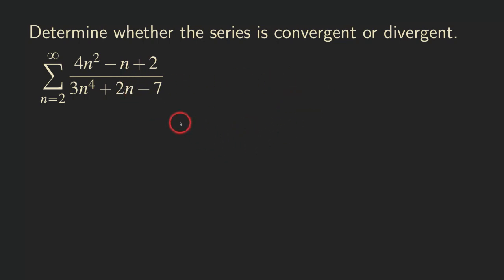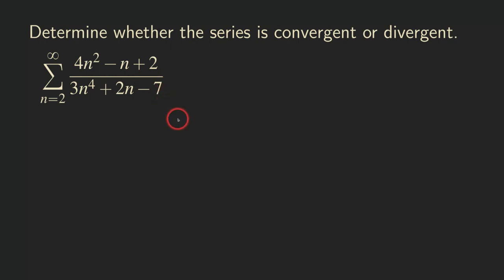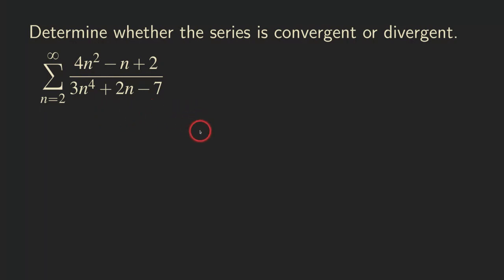You may ask why we are not using the ordinary comparison test to test the convergence of the series. The reason is because you have a lot of terms here besides the dominant terms. When you have so many other terms there, it's more difficult to establish the inequality that will compare the two series. It'll be easier to use the limit comparison test because you do not really need to determine which series has terms that are larger.